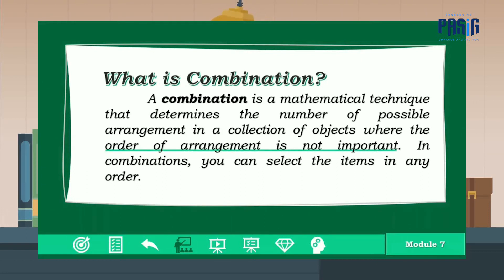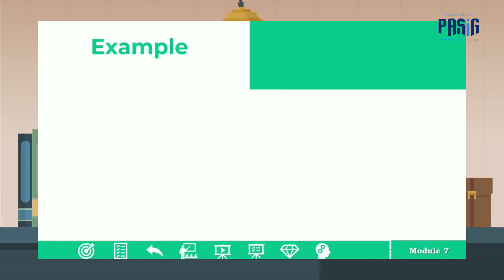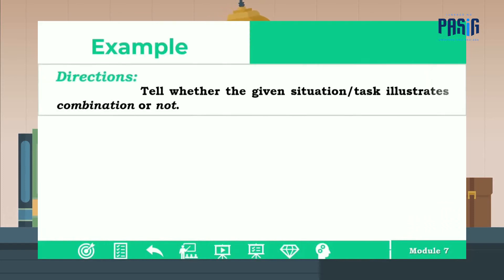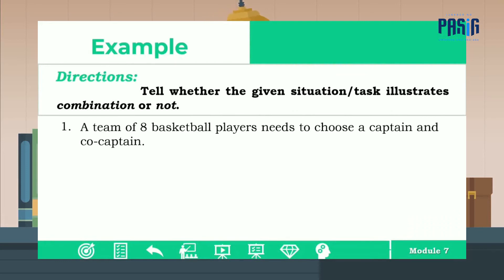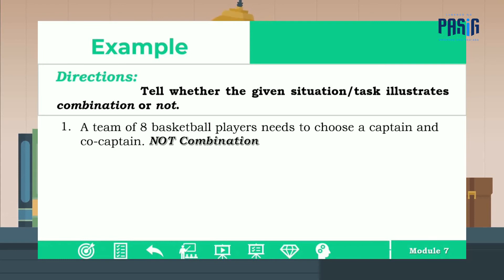The important thing to remember is that the order of arrangement is not important. Let's have an example. Directions: tell whether the given situation or task illustrates combination or not. Number one: a team of eight basketball players needs to choose a captain and a co-captain. It's not combination because in selecting a captain and co-captain, the order is important.